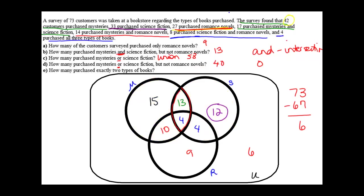Part E: How many purchased exactly two types of books? We know the center region represents people who purchased all three types. The intersections of mysteries and romance novels, mysteries and science fiction, and science fiction and romance — but not the center — are the parts with exactly two types. So 10 plus 13 plus 4 gives me 27.